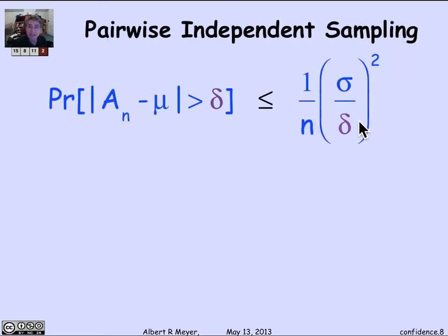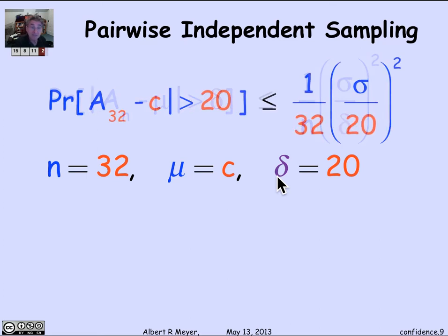Here's the independent sampling theorem formula. Let's see what I know already and plug in the knowns. I know that n is 32, μ is the unknown C that we're trying to estimate, and the delta that matters to us is 20. Because we want to argue that if our average of 180 was within 20 of the truth, then we're under the 200 that the EPA specifies. So let's plug in our known parameters, 32 for n and 20 for the tolerance.